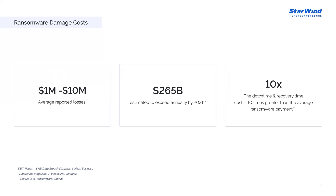Of those with reported losses, most said they lost between $1 million and $10 million. Over half of the companies that paid the ransom had corrupted data after the encryption was removed. The study also highlights two particularly troubling statistics: 80 percent of businesses that paid the ransom were subject to another ransomware attack, and over two-thirds of companies that paid ransom experienced another attack within a month. Looking ahead, Cybersecurity Ventures estimates global ransomware damages will experience 30 percent year-over-year growth over the next decade, with damages estimated to exceed $265 billion annually by 2031, with an attack happening every two seconds.